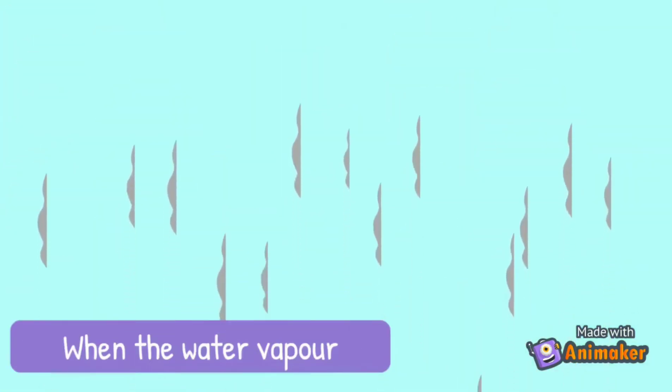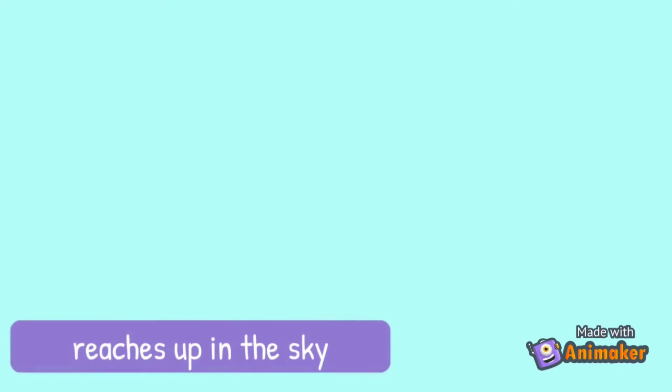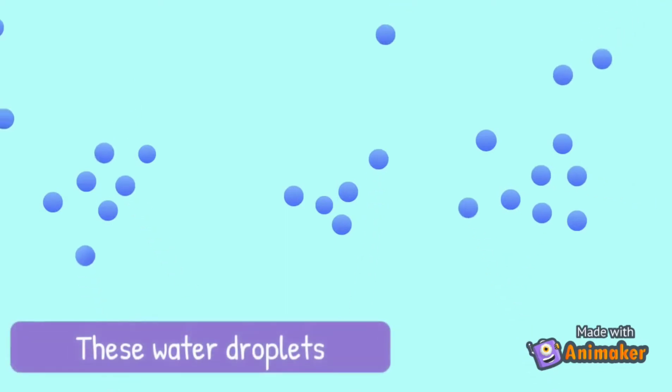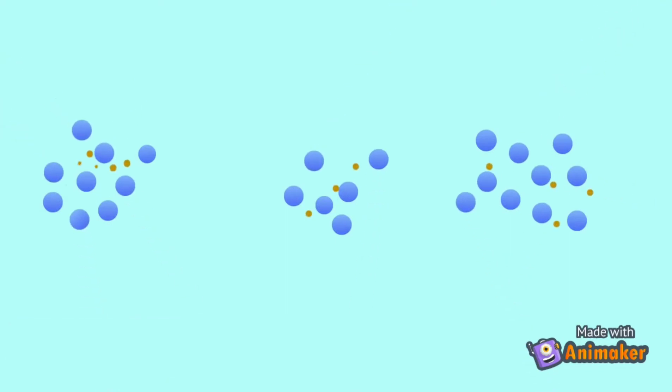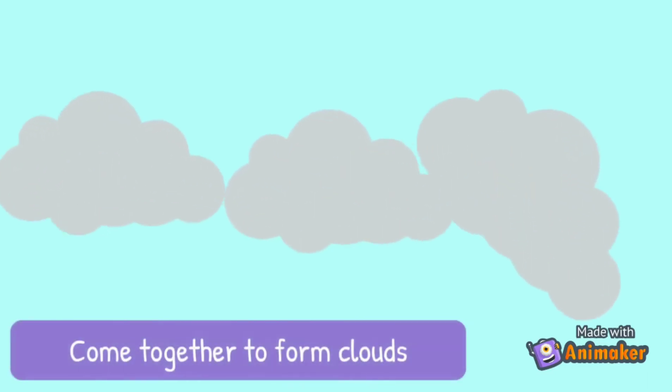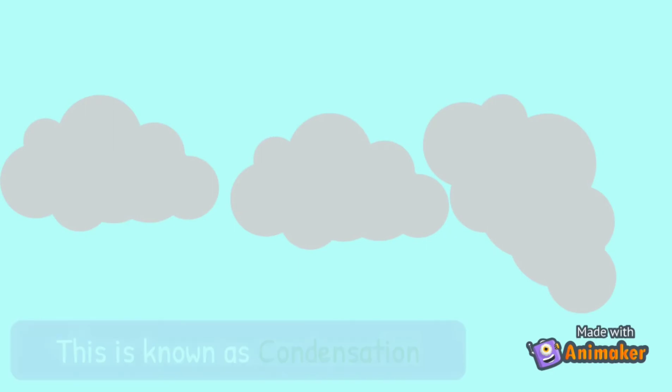When the water vapor reaches up in the sky, it turns into tiny droplets of water. These water droplets, along with various gases and dust particles, come together to form clouds. This is known as condensation.